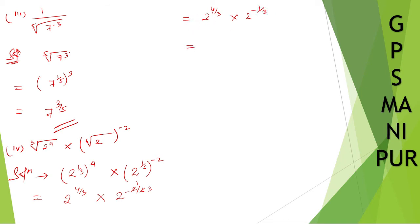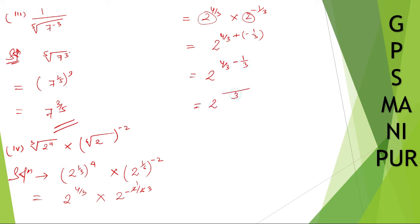Since both terms have the same base two and a multiplication sign, we add the exponents: four by three plus minus one by three. The LCM is three, so we get four minus one over three, which is three by three. Three divided by three equals one, so two to the power one is just two. Your answer is two.